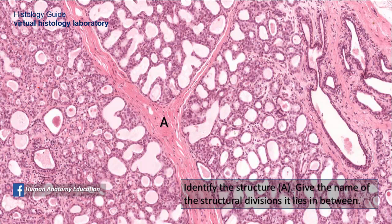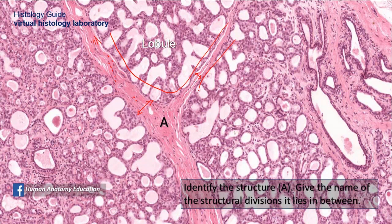Identify structure A and give the name of the structural divisions it lies between. Structure A is made of connective tissue — you can see the collagen fibers with fibroblasts between them. This is an interlobar septum in a breast, separating the lobes of the breast. The lobe is further subdivided into lobules, divided by thinner interlobular septa. You can also see the acini of the breast and a lactiferous duct.